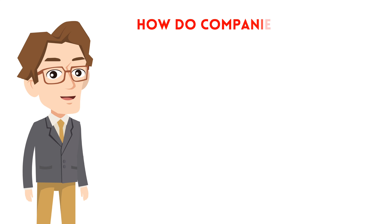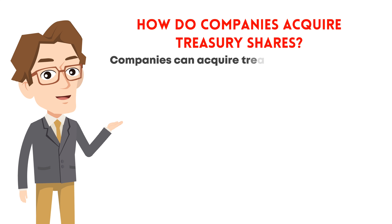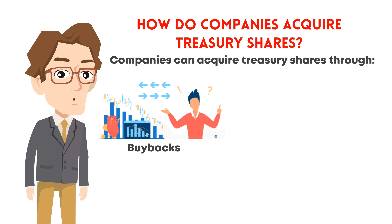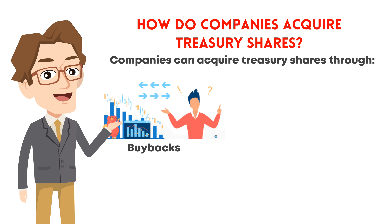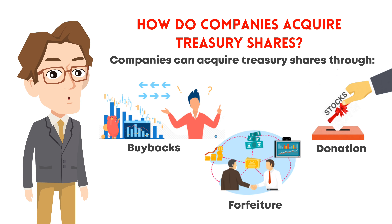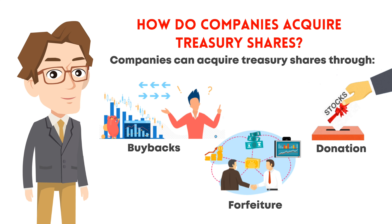How do companies end up with treasury shares? Companies can acquire treasury shares through buybacks — the most common method, where a company repurchases its own shares from the open market. Shares may also be forfeited by shareholders, for example due to failure to meet certain conditions. Occasionally, shareholders might donate shares back to the company.